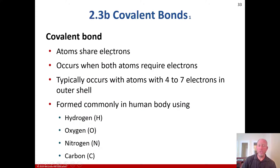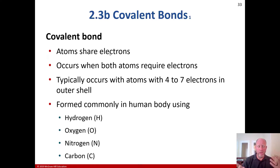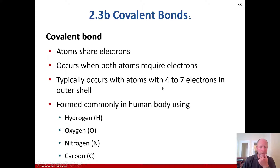A covalent bond is when atoms share electrons, rather than one gaining or losing electrons as in an ionic bond. It occurs when both atoms require electrons, and typically occurs with atoms that have 4 to 7 electrons in the outer shell.